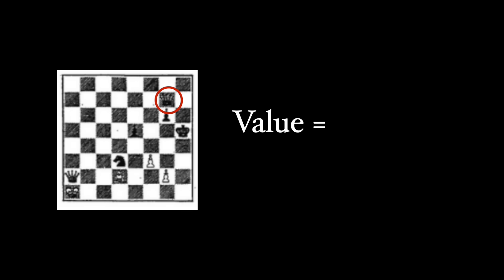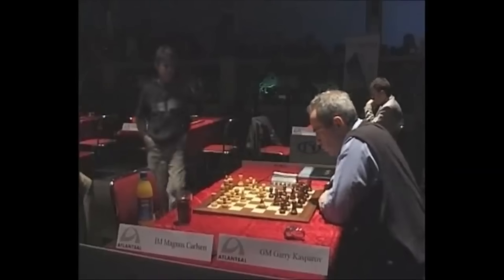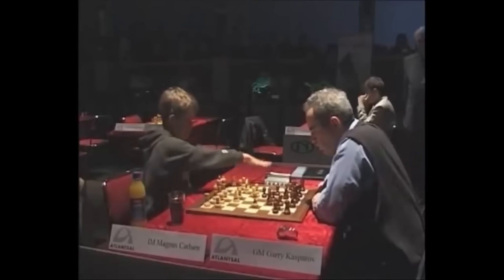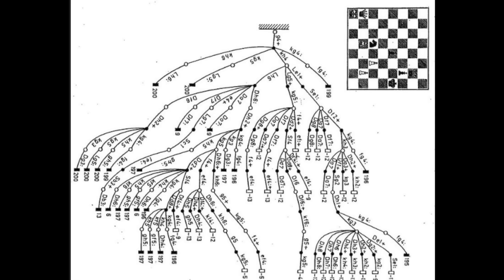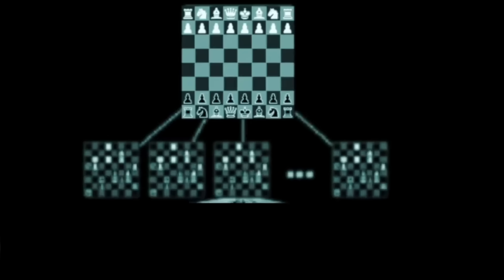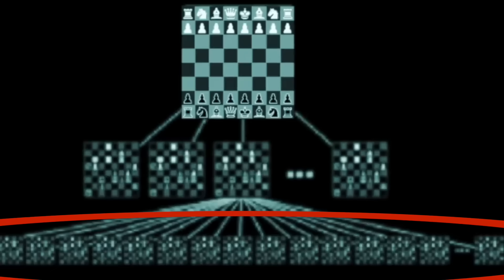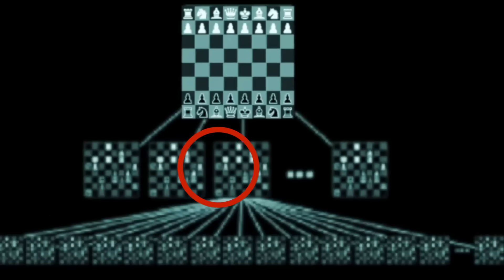Early chess AIs calculated board value mainly by counting piece values. While this approach worked, it was only a rough approximation of how good a position was, nowhere near human-level understanding. The further into the game's future the algorithm explores and evaluates, the better the play will be. In the extreme case, you would look out to the end of every possible game path and count the number of future wins possible from each position, with the best move being the next position with the most future wins.